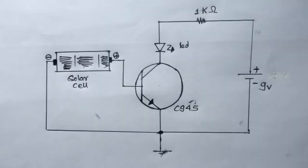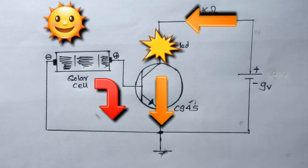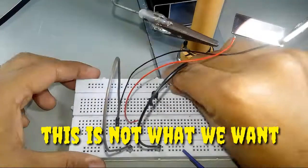So one can design this simple transistor circuit which, when light falls onto the solar cell, turns on the transistor and activates the circuit. But this is not what we want.